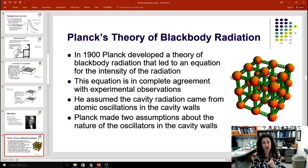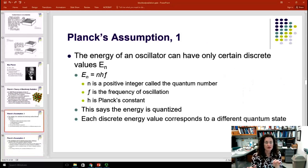Now, he made two assumptions about the nature of the oscillators in these cavity walls. Assumption number one was this: that the energy of the oscillator can only have certain discrete values, E_n. These values would be described by the equation n h f. h was a constant that he extracted from his fit. It became known as Planck's constant later. f is the frequency of the oscillation. And n is an integer, a positive integer, that's called the quantum number, sometimes also called the energy level.